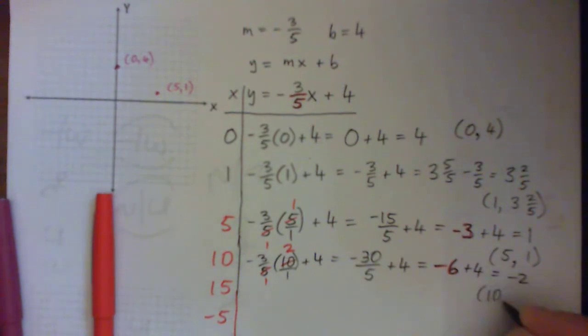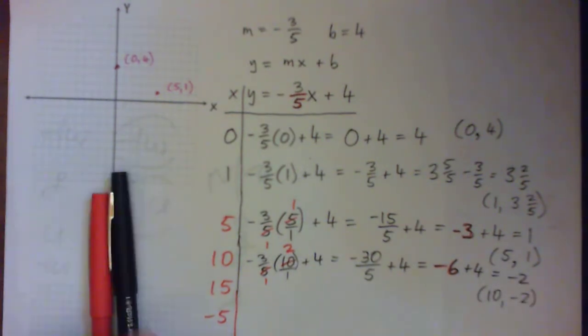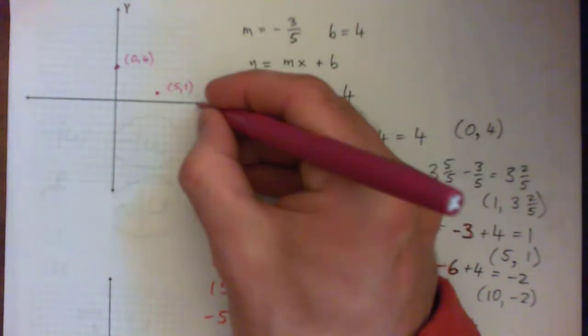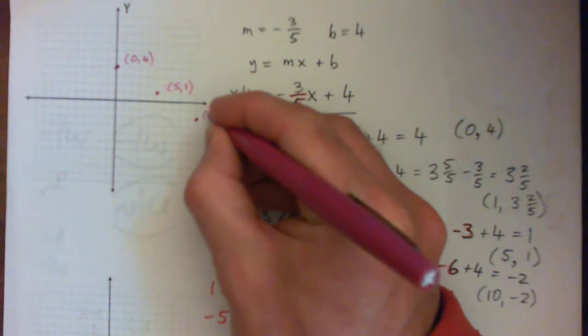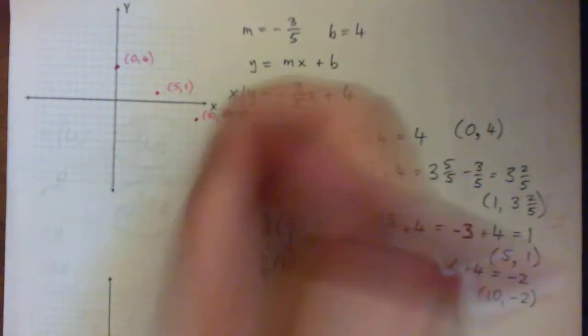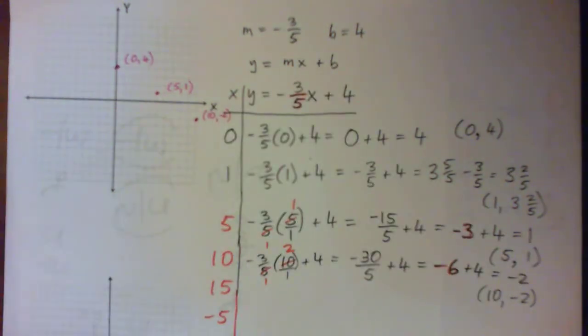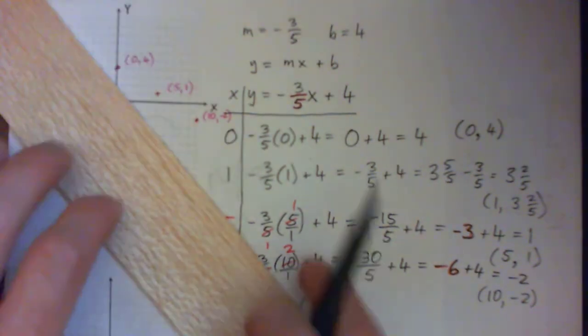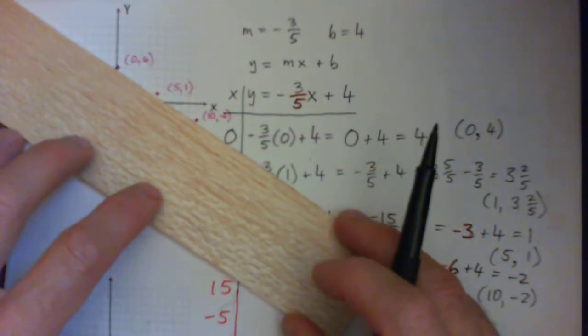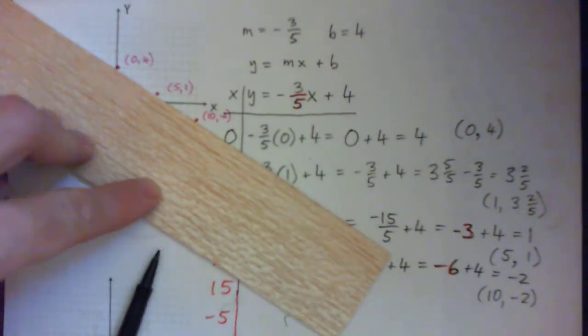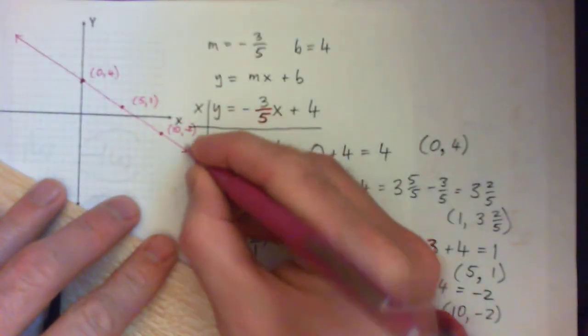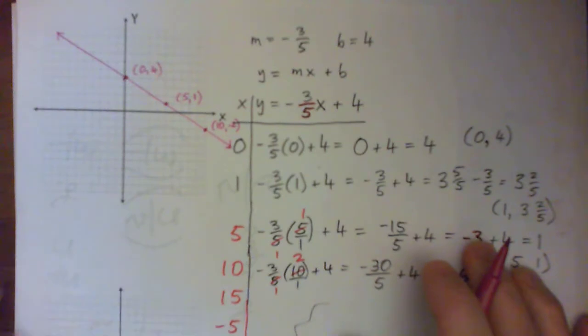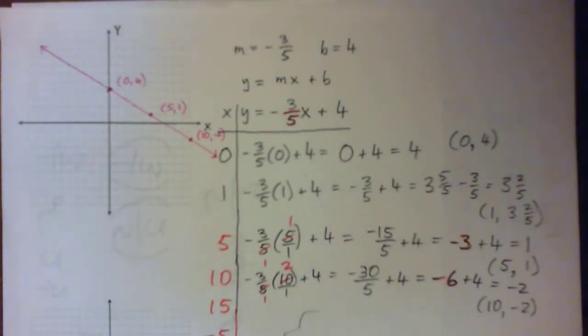We have this point 10, -2. On the grid, we plot X is 10, Y is -2. And now we can draw a line through those points. That's our line and that's the answer, the graph.